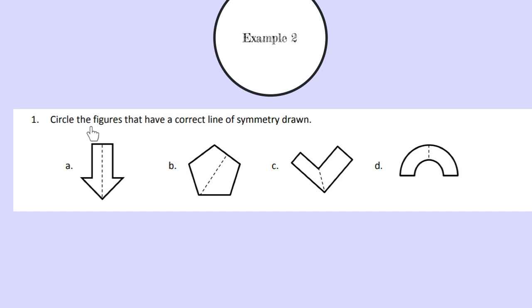Moving on to example 2, our directions tell us again to circle the figures that have a correct line of symmetry drawn, and we're going to start with part A. We see our line of symmetry, which appears to be exactly in the middle, cutting our arrow in half. And if we were to fold this part of the arrow onto this part of the arrow, they would match exactly. Therefore, this is the correct line of symmetry drawn.